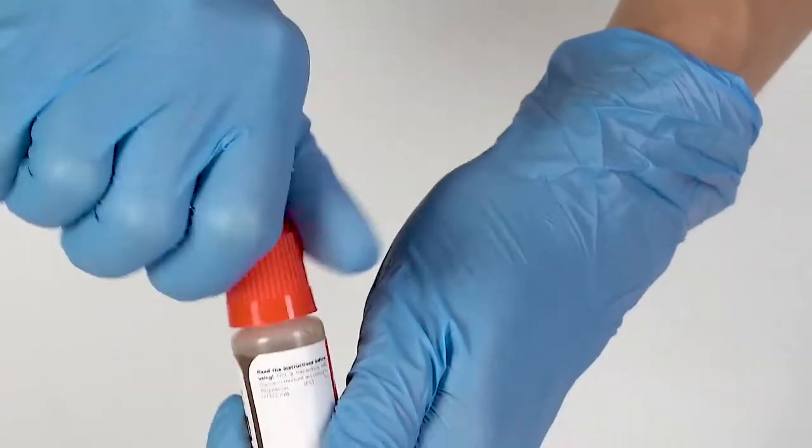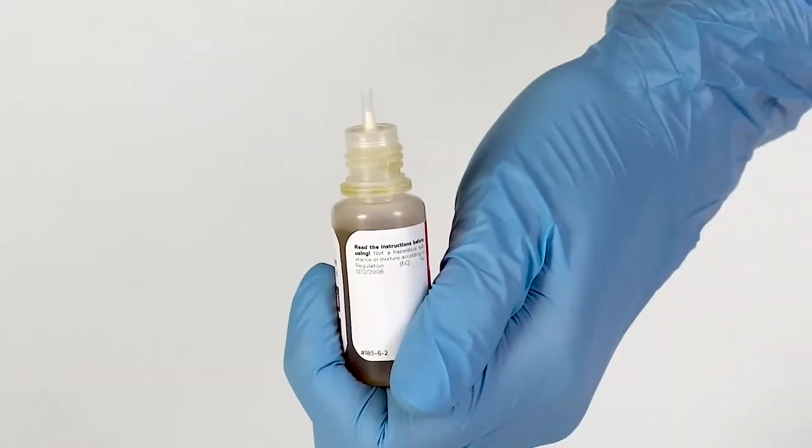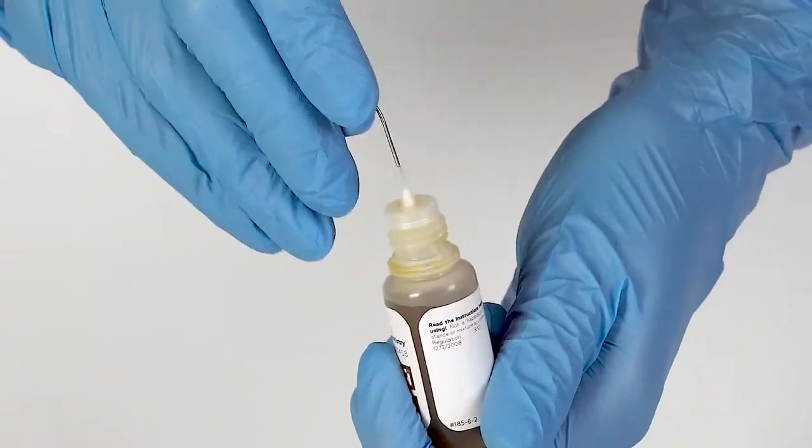To open a bottle containing a reagent, push the cap down and turn it. Pierce the bottle nozzle with an unbent paper clip.